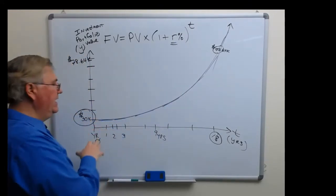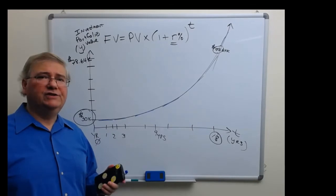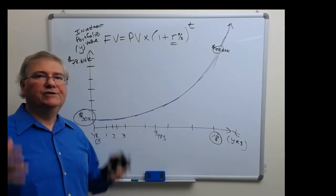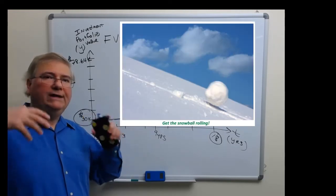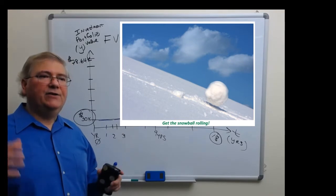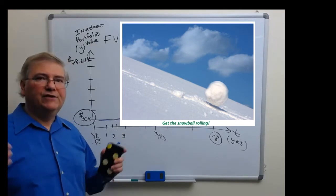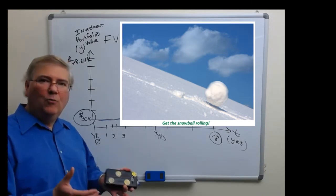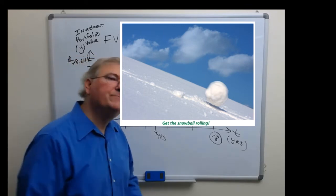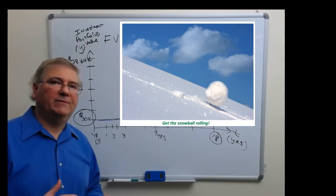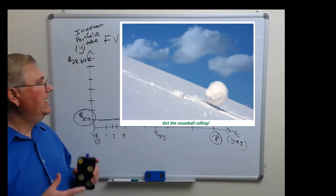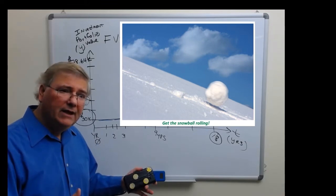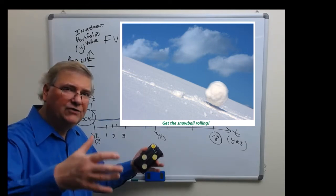Whenever I teach students about the future value formula, I always like to use the analogy of a snowball that is rolling down a mountain. Let's say you're at the top of Mount Everest and the snow is packing pretty good, and you start rolling a small snowball down the top of Mount Everest. What do you think is going to happen over time to that snowball as you're rolling it down the mountain? It starts to pick up snow and the size of the snowball starts to increase.